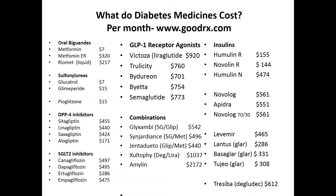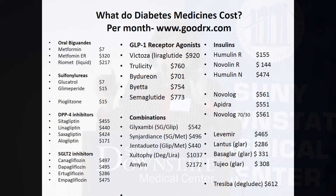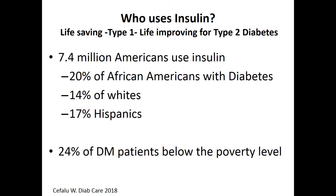Getting medicines is very difficult and time-consuming — you have to deal with prior authorization, which is the bane of everyone's existence. Who uses insulin? 7.4 million Americans use insulin: 20% of African Americans with diabetes, 14% of whites, and 17% of Hispanics. There's a 6% higher insulin use among African Americans than whites, partly because some have an insulin-sensitive form of diabetes as adults. A quarter of diabetes patients below the poverty level require insulin.